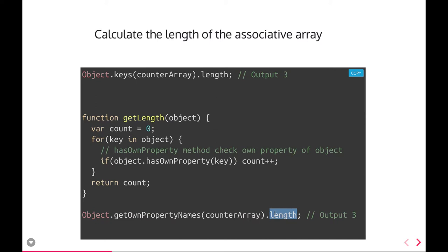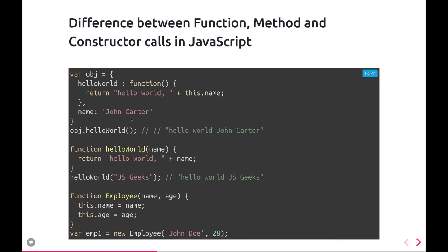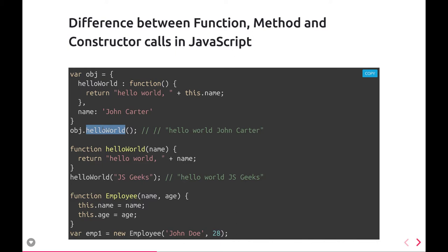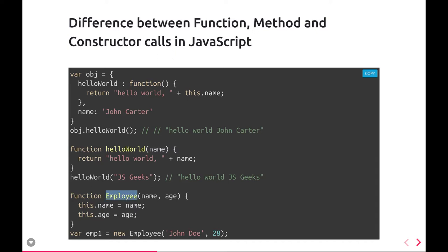Object.keys gives you an array on which you can iterate and get each and every object property, or you can write a for...in loop to iterate over each object property. Another basic question is the difference between functions, methods, and constructors. A method is a function defined as a property on an object — here we are calling a helloWorld function from an object. For a constructor function, you use the new keyword: new actually calls the constructor of the employee function and creates an object from it.